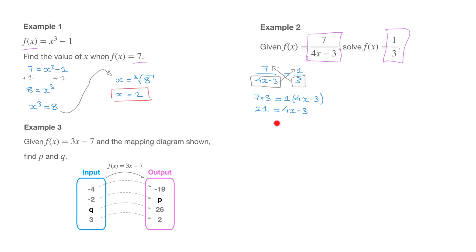At this stage, we're faced with a linear equation for x, and to solve it we use inverse operations again. I'll start by getting rid of this 3 that's being subtracted from the right-hand side, adding 3 to both sides, which leads to 24 equals 4x. Next, I need to get rid of this 4 that's multiplying the x, so I divide both sides by 4. 24 divided by 4 is 6, and 4x divided by 4 is just x, so we have x equals 6.